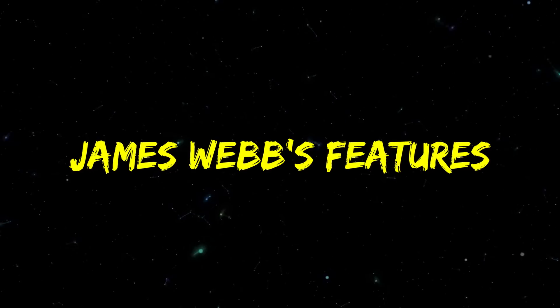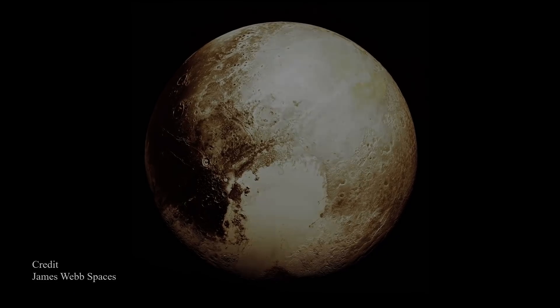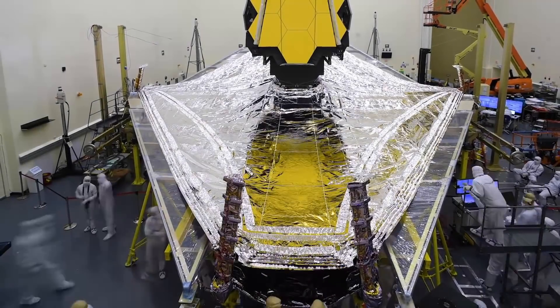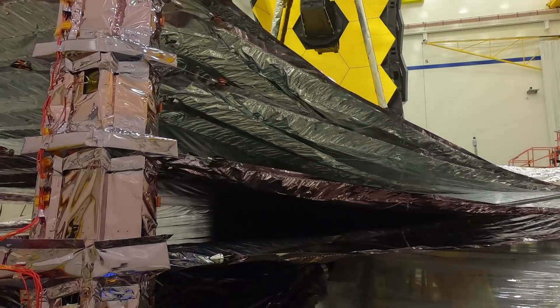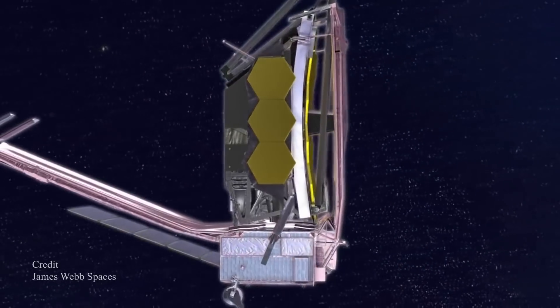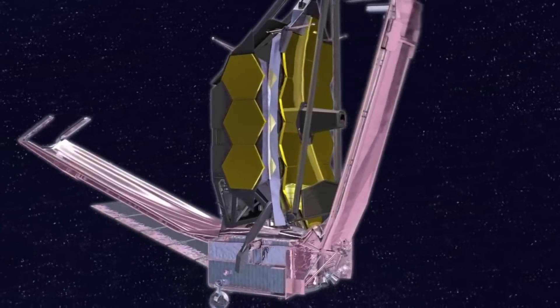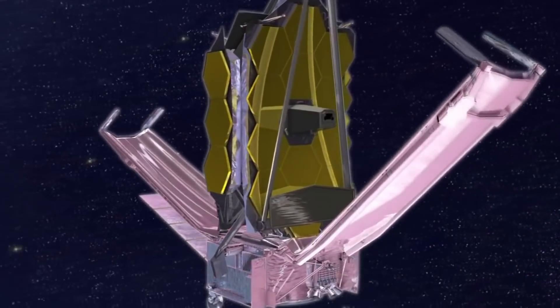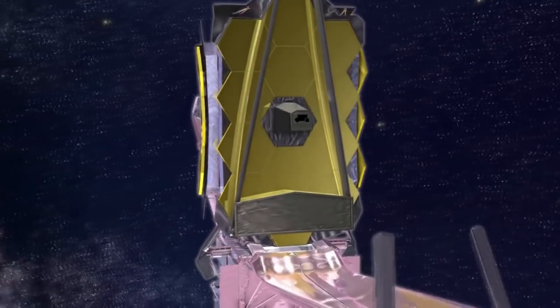Despite James Webb being much larger and more functional than its predecessor telescope Hubble, it doesn't have as much weight. In fact, Webb is said to have a mass that is about half of Hubble's mass, making it lighter but more efficient.